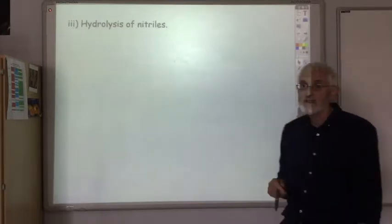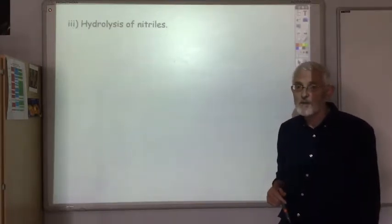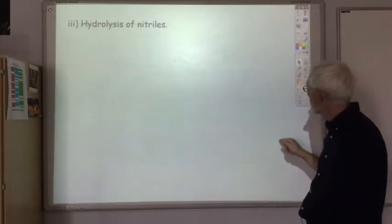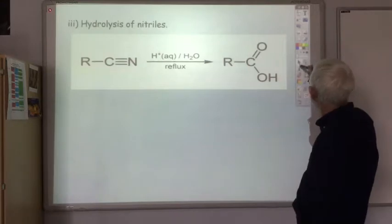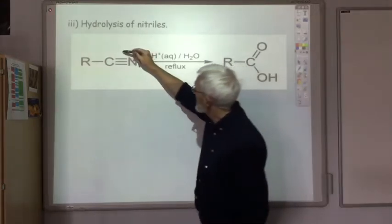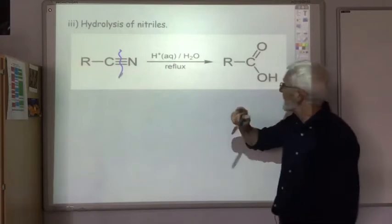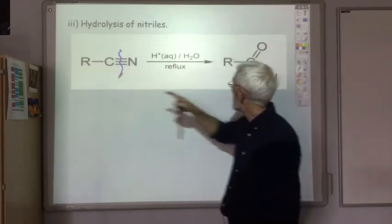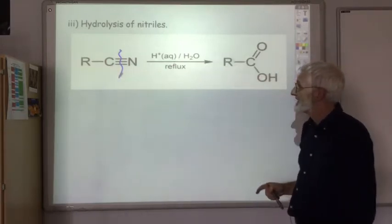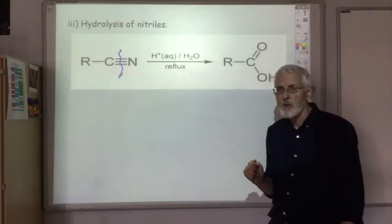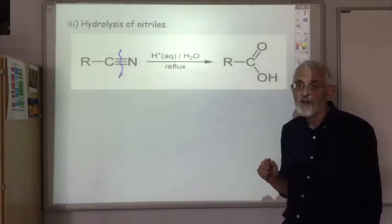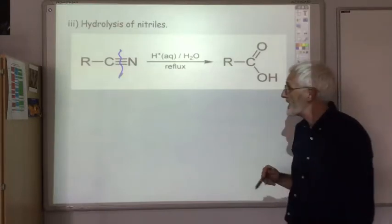The third method is also hydrolysis. It's the hydrolysis of a nitrile. So in this case we're breaking the C triple bond N and sticking an OH on there to produce our carboxylic acid. So you might be thinking oh I remember seeing this somewhere else. We came across this when we were looking at reactions of halo alkanes.